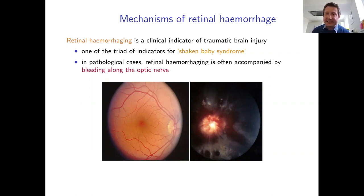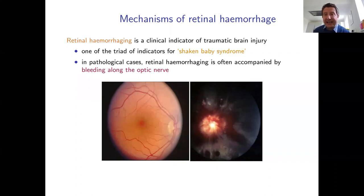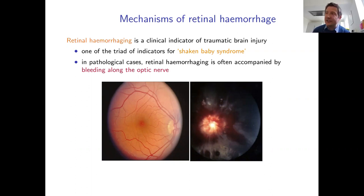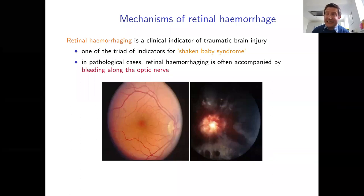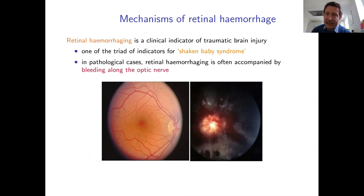Monitoring retinal hemorrhage is attractive because it is very easy — much simpler and safer than repeated CT scans — and there is a strong correlation between the presence of retinal hemorrhaging and the severity of brain injury. In addition to standard TBI, the presence of retinal hemorrhages is one of the triad of indicators used for diagnosing shaken baby syndrome. In pathological cases, retinal hemorrhaging is often accompanied by bleeding along the optic nerve, though this is only confirmed post-mortem.